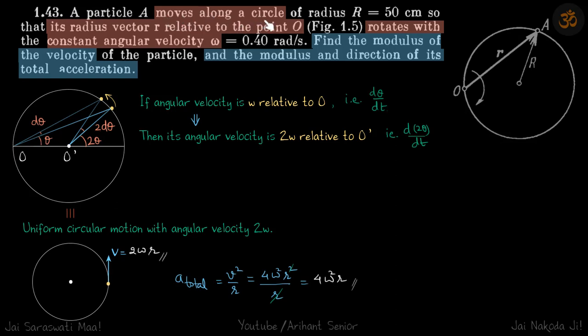A particle is moving along a circular path such that its radius vector relative to point O is rotating with a constant angular velocity omega. We need to find the modulus of velocity and the modulus and direction of its total acceleration.